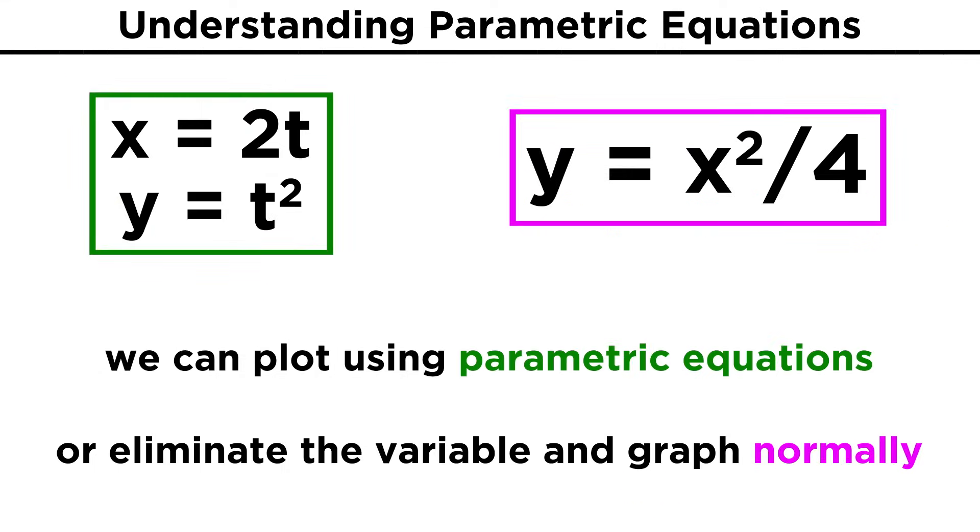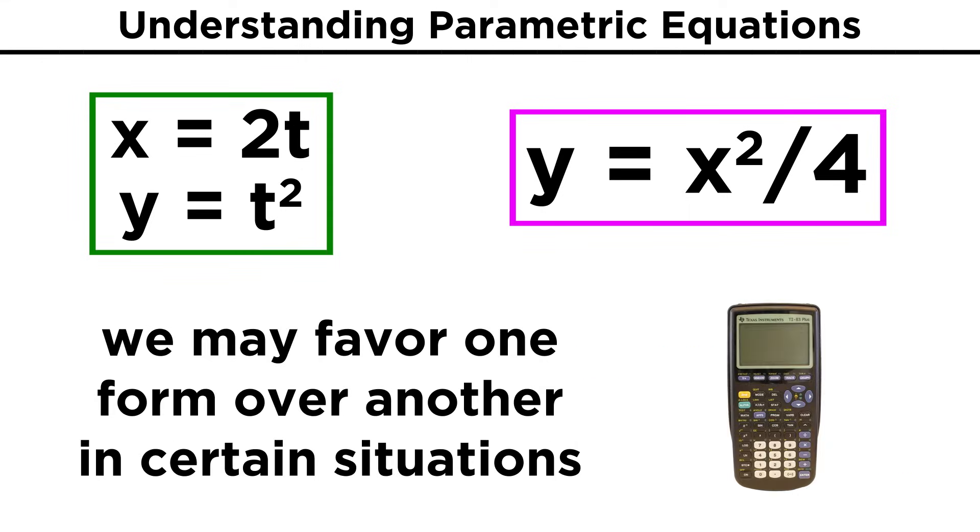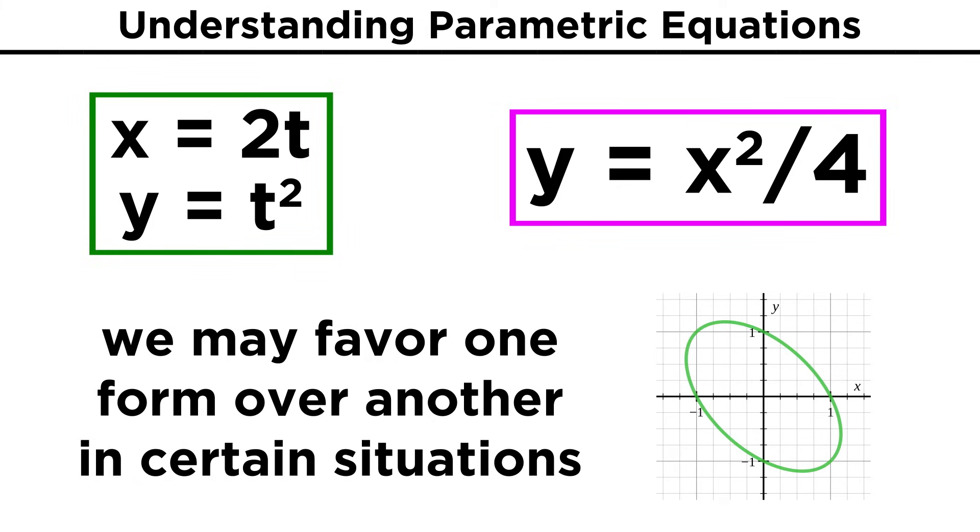Depending on the situation, it can be easier to plot points using the parametric equations, or to find a way to eliminate the parameter and just graph it normally. There are different situations that would favor one approach over the other. For example, if using a graphing calculator, it can be easier to enter the equation of something like an ellipse in parametric form rather than rectangular, but an ability to understand how to move between these two types of equations is all we really need, so let's check comprehension.